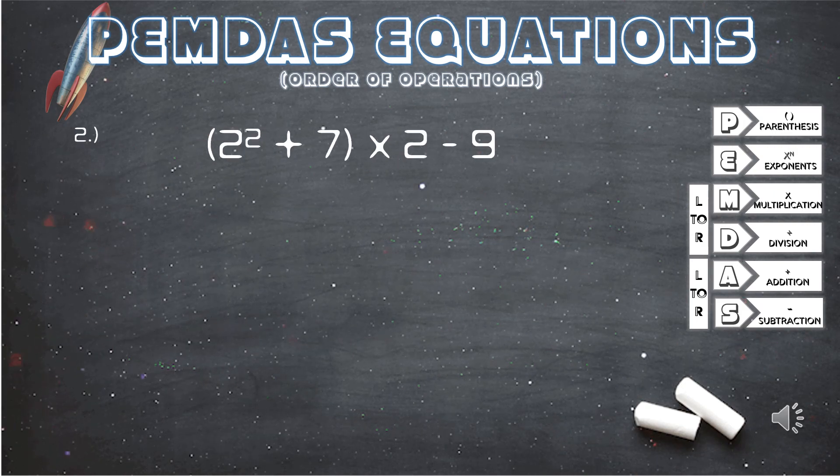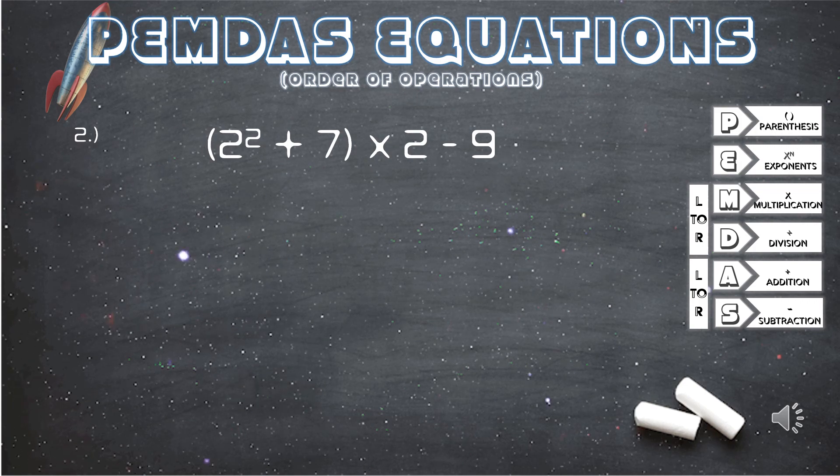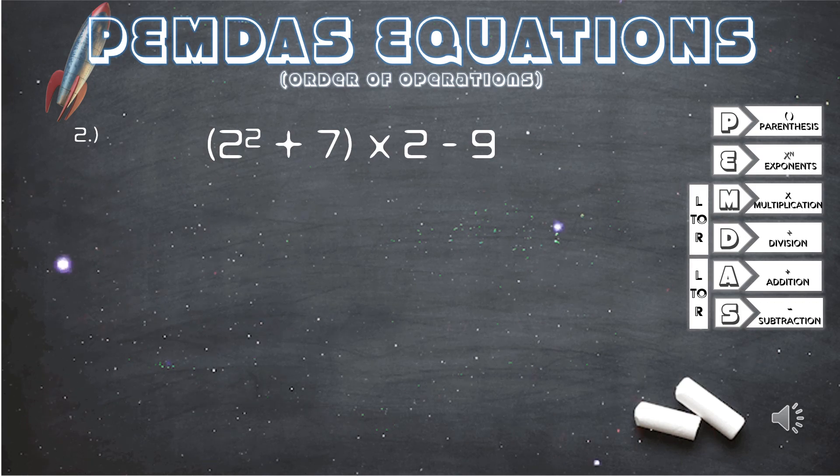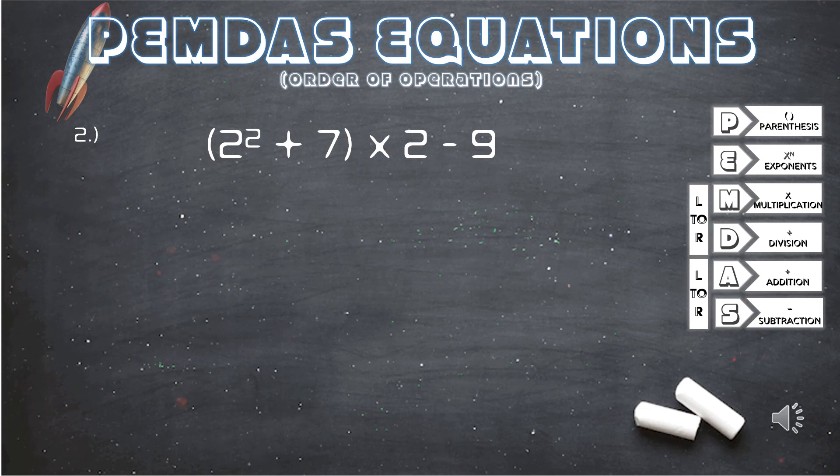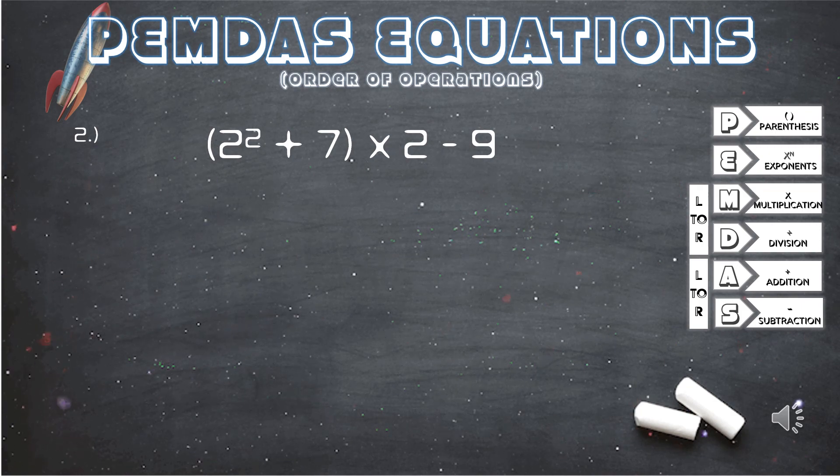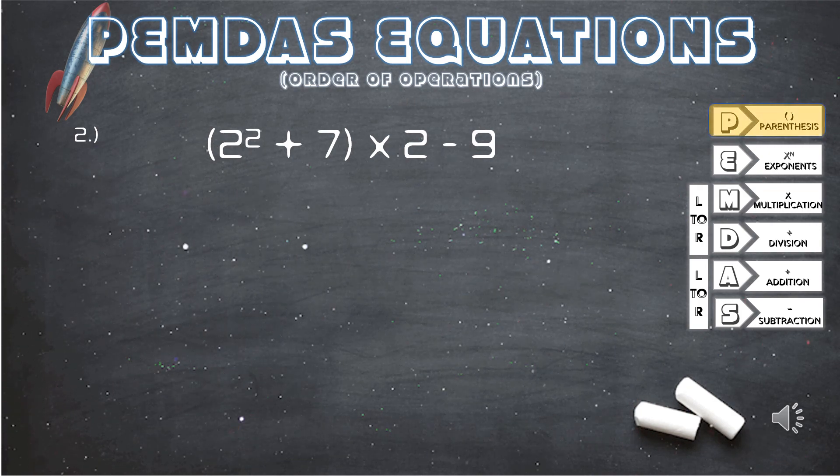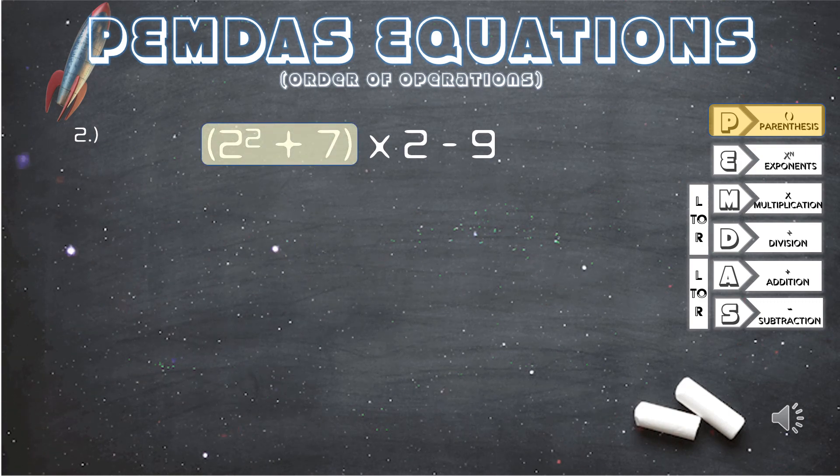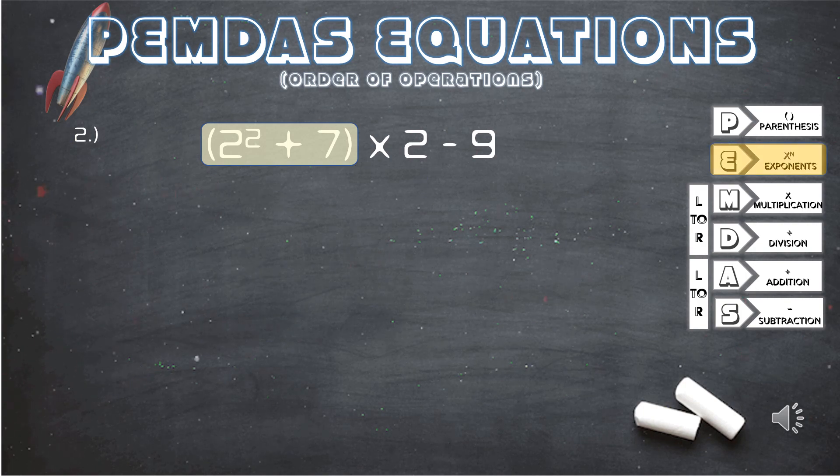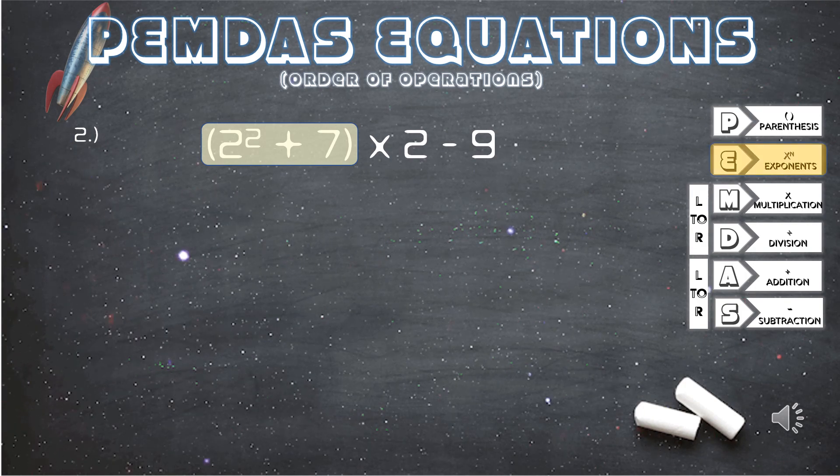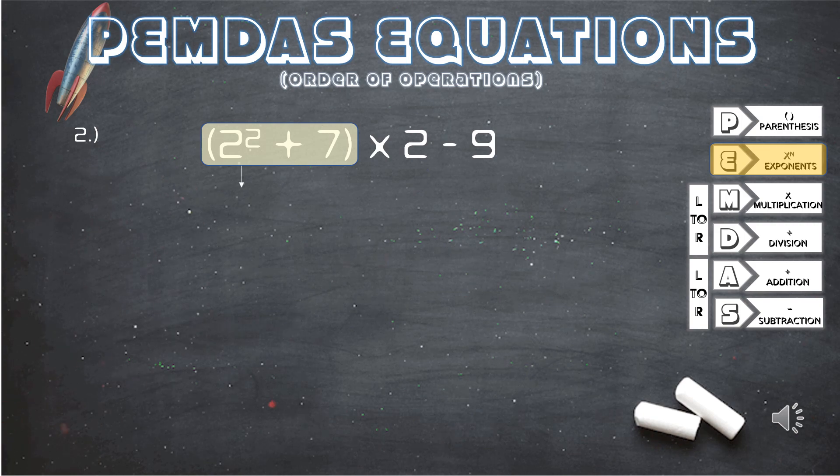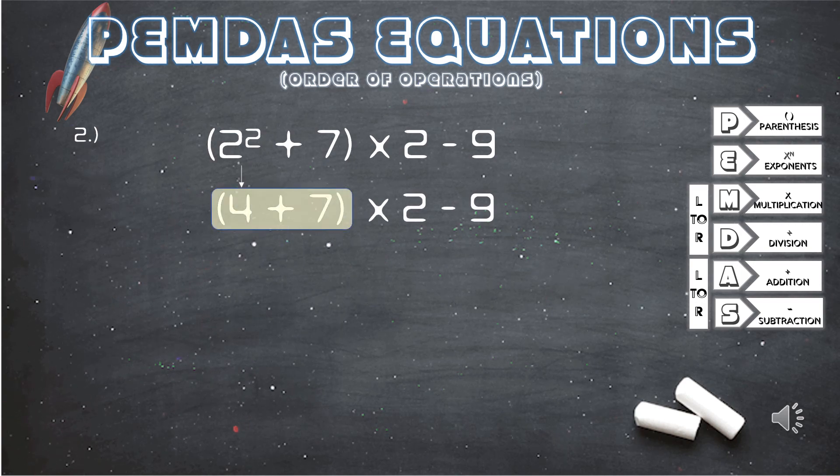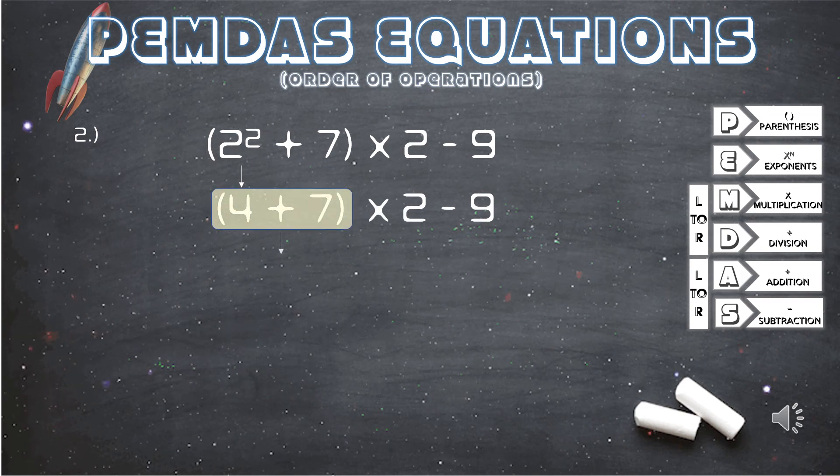Question number 2. Parentheses 2 squared plus 7 parentheses times 2 minus 9. A quick glance at our PEMDAS guide, and we will see that we will start with what is in the parentheses. Let's apply PEMDAS to the equation within the parentheses, and that is solving the exponent first. We have 2 squared. 2 times 2 equals 4. Now we can solve the rest of the equation in the parentheses. 4 plus 7 gives us 11.